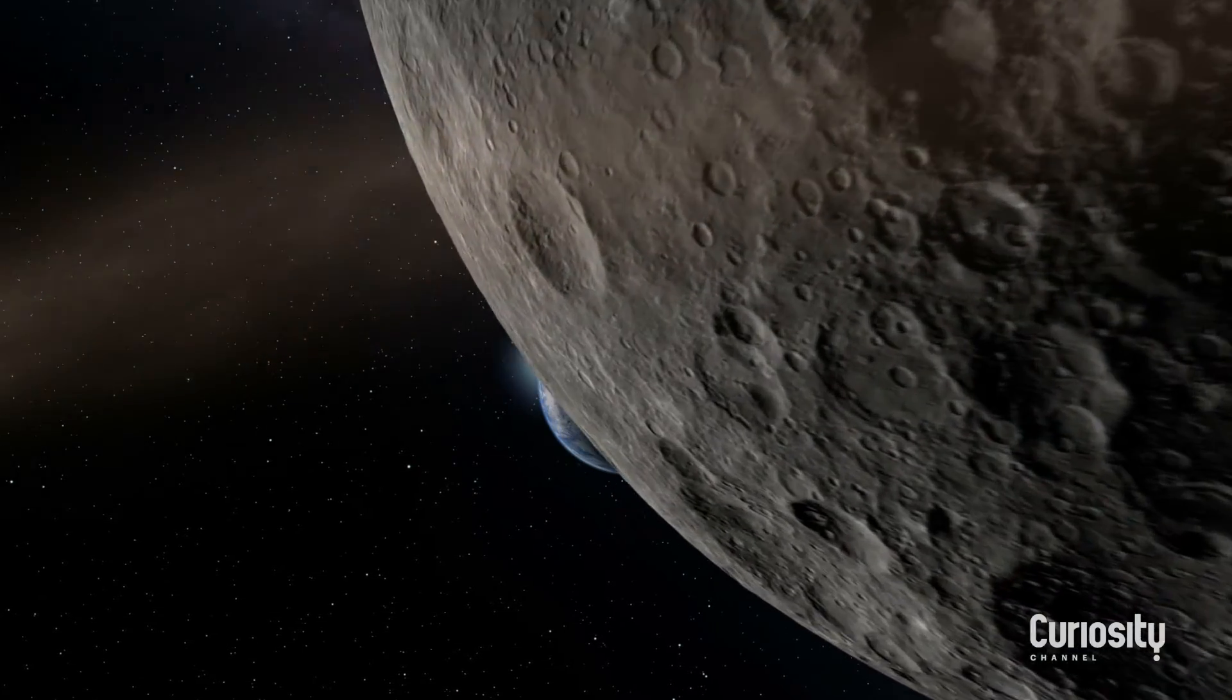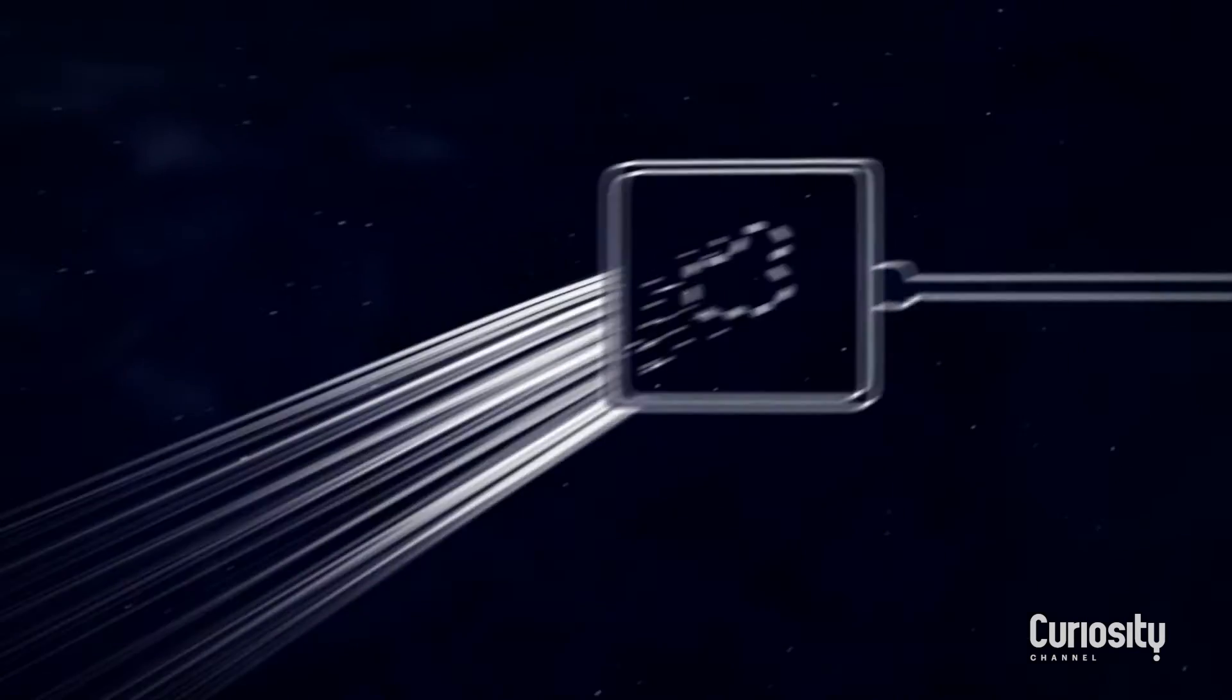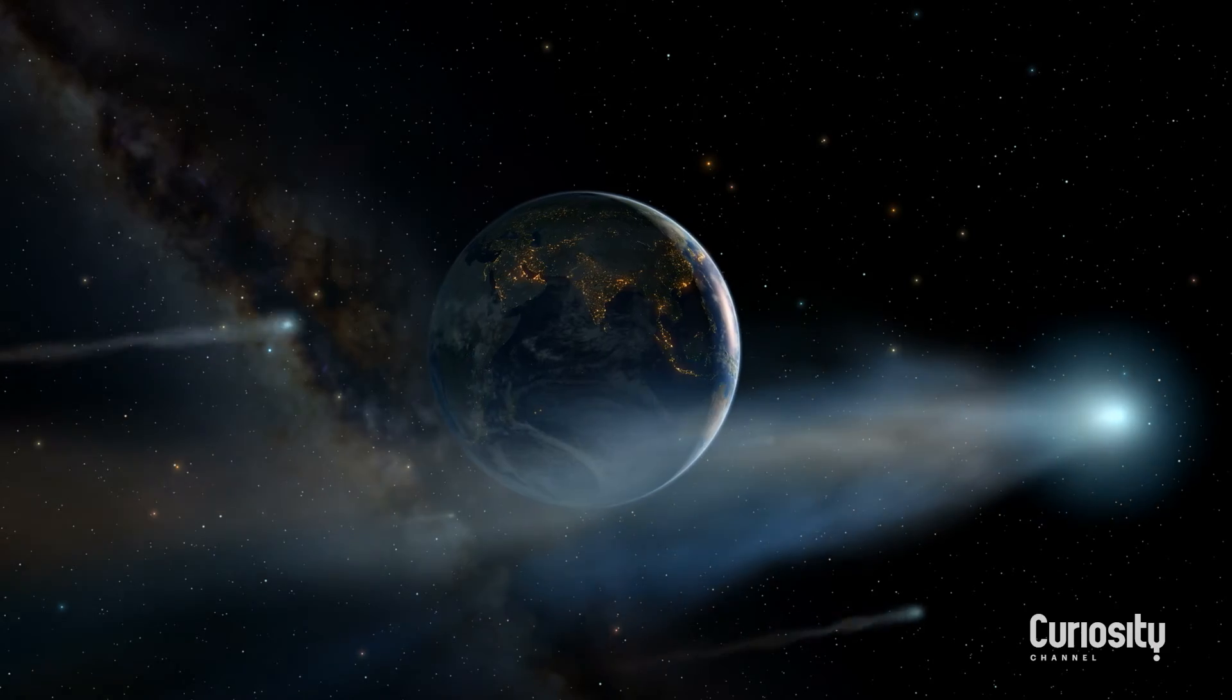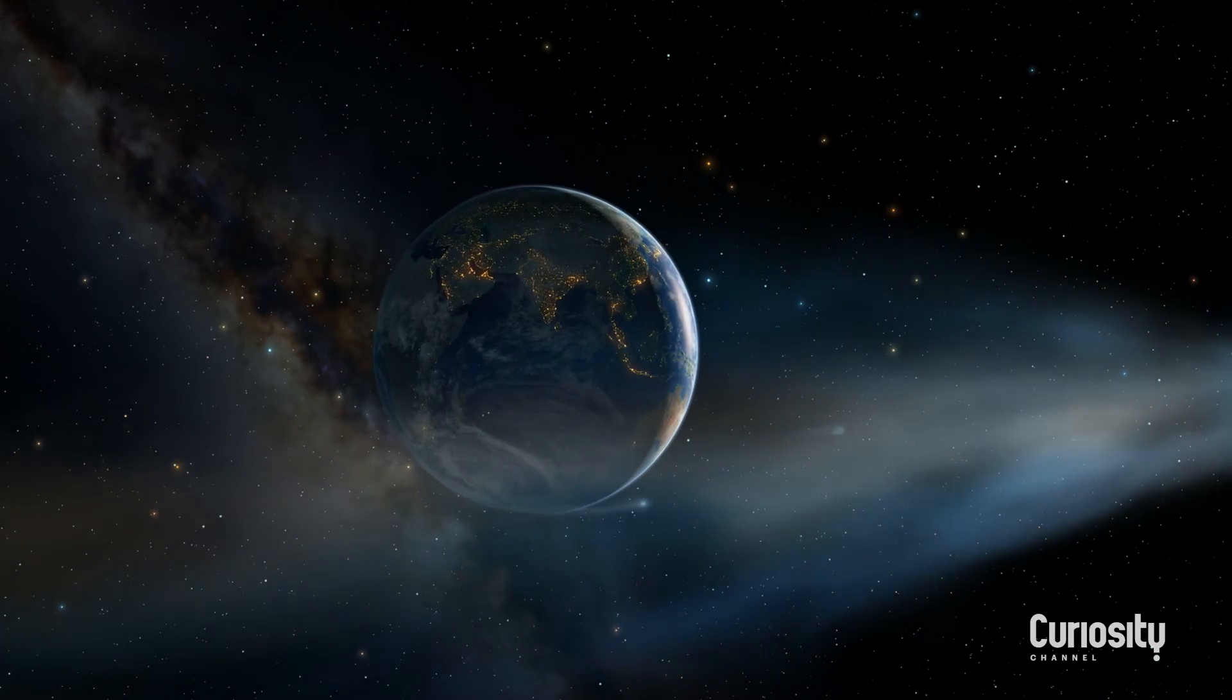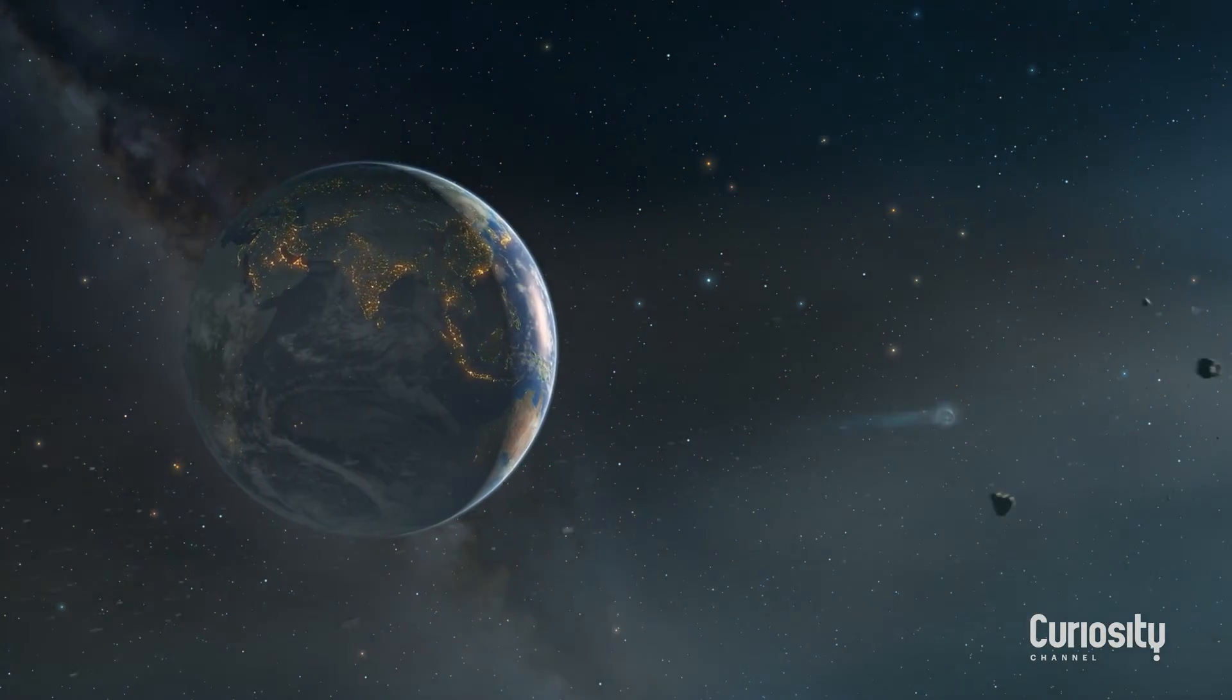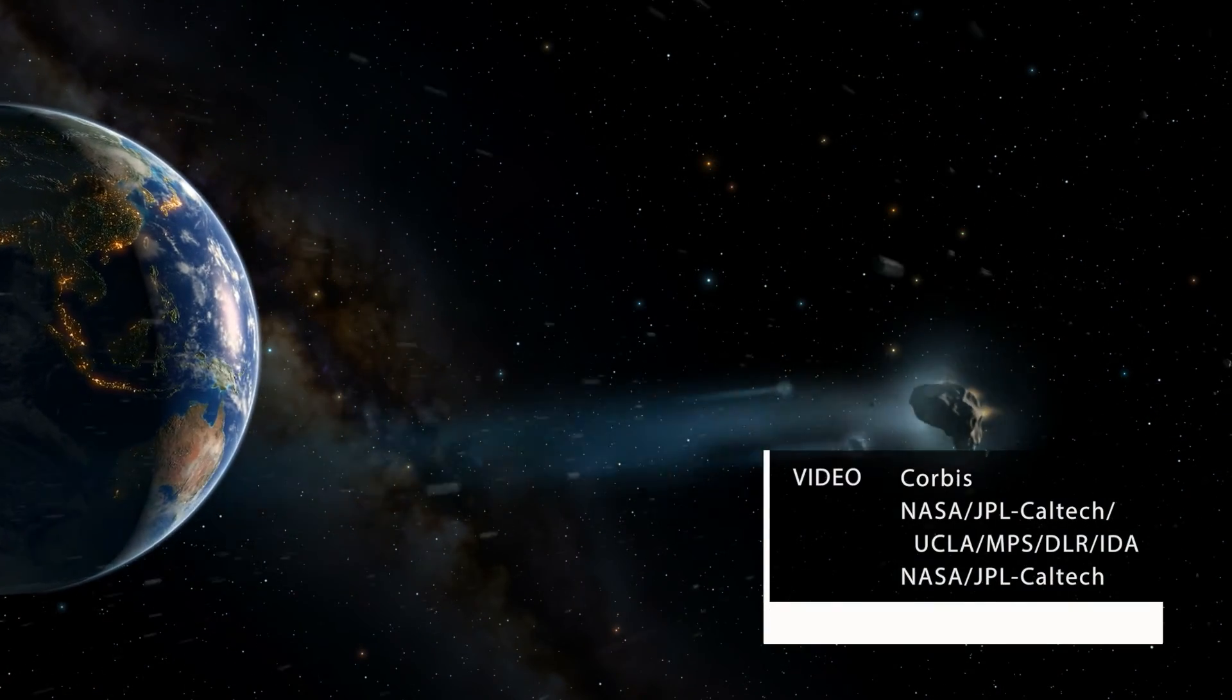We're realizing that how we define comets and asteroids is not so clean cut. There's no easy way to define this is an asteroid and this is a comet, because there's clearly a continuum of objects that fill in the space between no activity and activity. And the more we look, the more we are surprised by how difficult it is to clearly segregate out all these different types of objects.